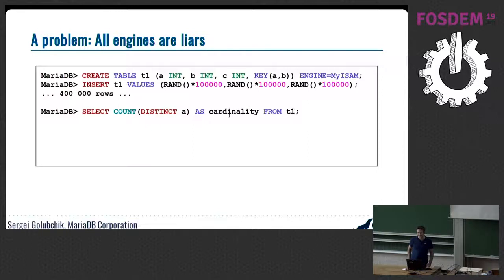Another problem is that all engines report statistics in arbitrary cost units. But they are different cost units for different engines. And engines lie about what data are in the table. This is an example. I have a table with three integer columns. I populated every column with a random number between zero and one hundred thousand and repeated it four hundred thousand times. Now I do select count distinct, which is honest, exact SQL calculation to get the number of distinct values. It was four hundred thousand rows and numbers are between zero and hundred thousand. So it should be about hundred thousand distinct values. And this is exactly what I've got.